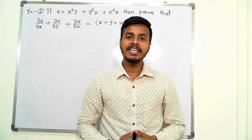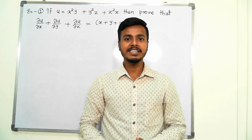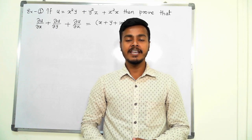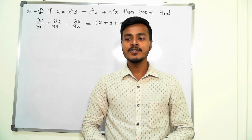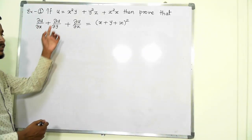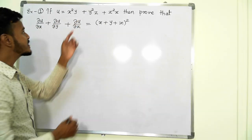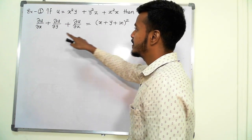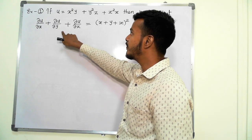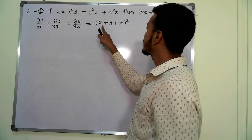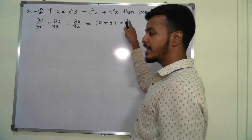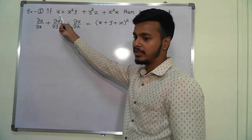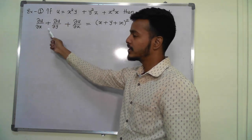Hello and I am back with the very next video on the topic that we started earlier, that is partial differentiation. So let us take an example on partial differentiation. The problem says: if u is equal to x squared y plus y squared z plus z squared x, then prove that del u by del x plus del u by del y plus del u by del z is equal to x plus y plus z, whole square. We are given a function u which is a dependent variable and we have to show this result.